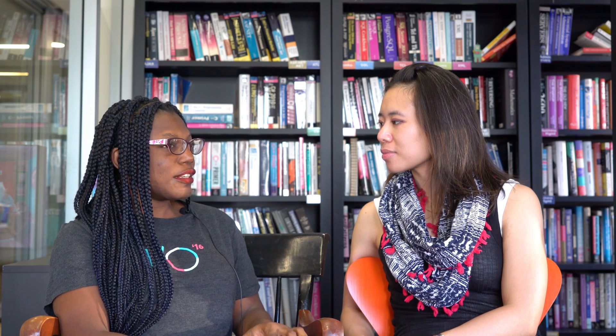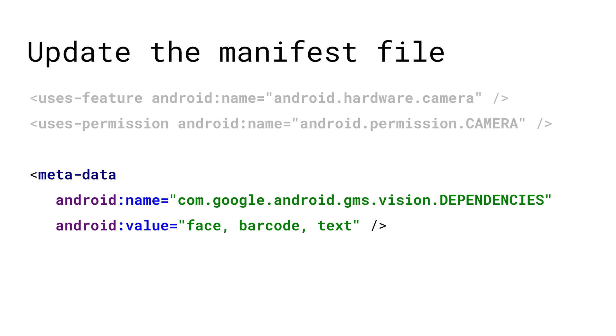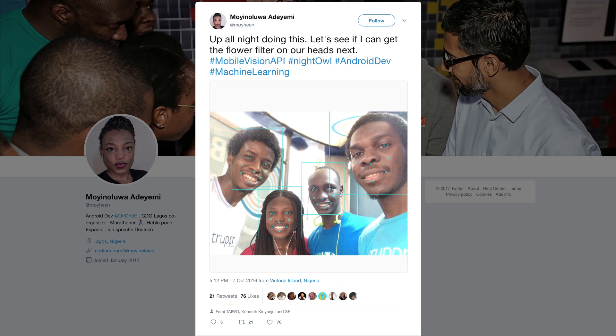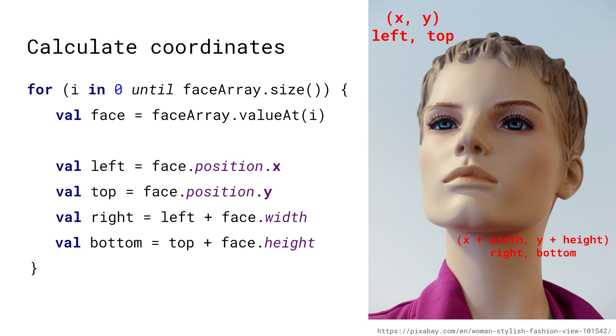How does the API work? Is it straightforward to use? It's really easy to use. Once you've imported the library into Gradle, you have to add metadata to the manifest file, and then all you need to do is call the API and call some methods on it. So if you have five faces in a picture, for example, you get all that data into a sparse array, and then you begin querying the sparse array and getting the values from it. That's all.